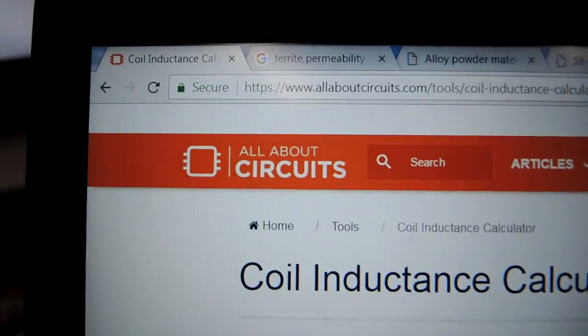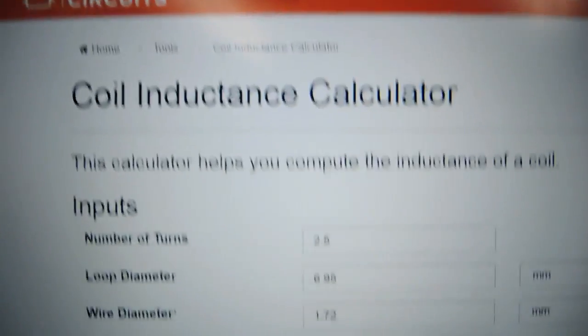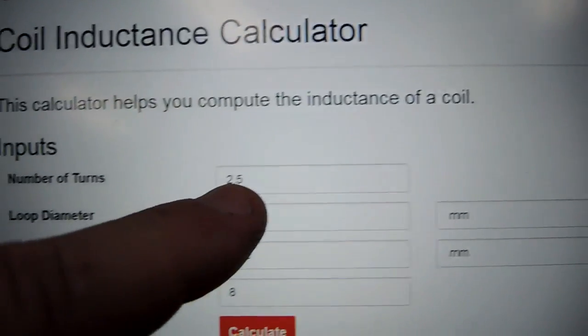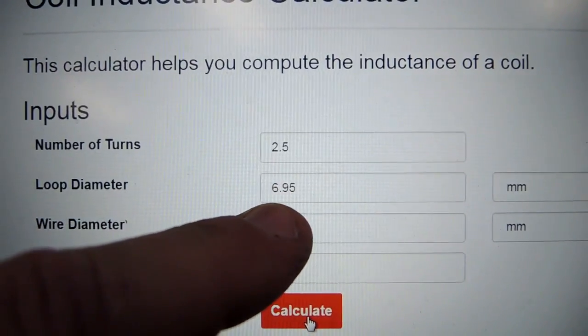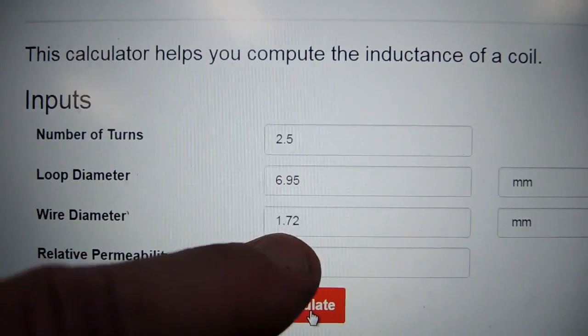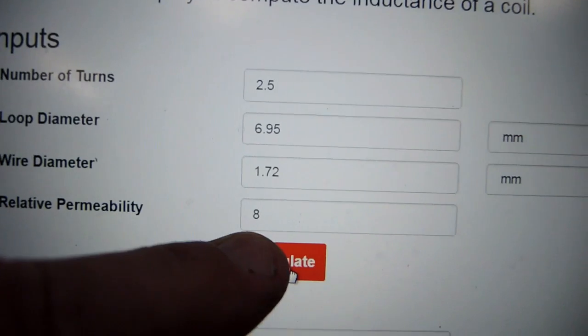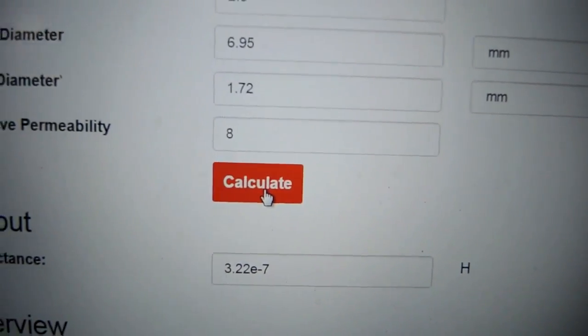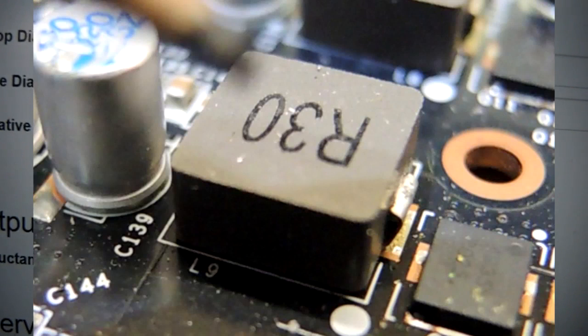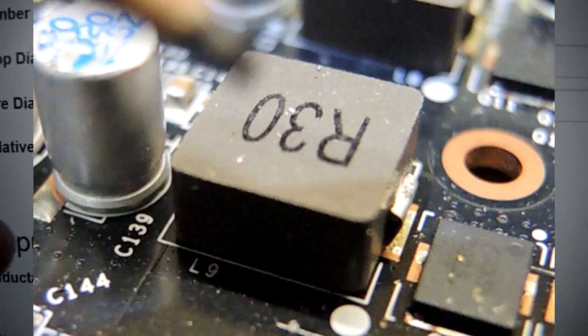There are lots of calculators on the web. This one's from All About Circuits. I entered the number of turns—two and a half, because you get half a turn as the wire turns back to those pads. This is the diameter I measured, the wire diameter. Permeability I entered 8 to come up with 322 times 10 to the minus 7. The inductor is marked R30, which is a 0.3 microhenry, so some correlation there.